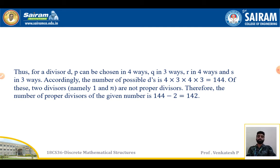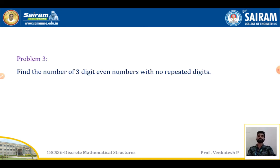So p can be chosen in 4 ways, q can be chosen in 3 ways, r can be chosen in 4 ways, and s can be chosen in 3 ways. Accordingly, the number of possible divisors is 4 times 3 times 4 times 3, which equals 144. Out of these, the divisors 1 and n itself are not proper divisors, so we eliminate them. Therefore the number of proper divisors is 144 minus 2, which equals 142.